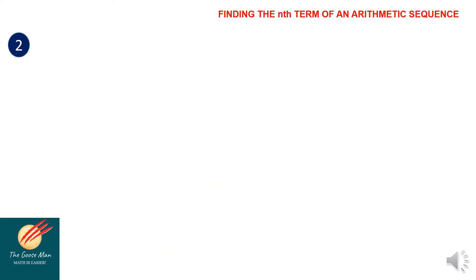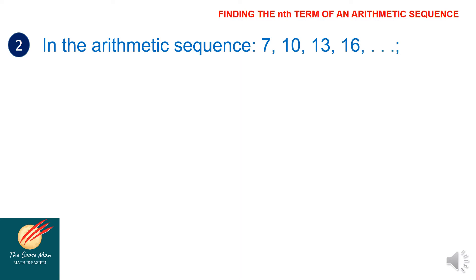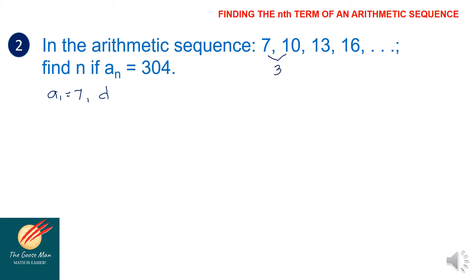Next example: In the arithmetic sequence 7, 10, 13, 16, find n if a sub n equals 304. The first term a sub 1 is equal to 7. The common difference: 10 minus 7 is 3, 13 minus 10 is 3, and 16 minus 13 is also 3. So the common difference is equal to 3.